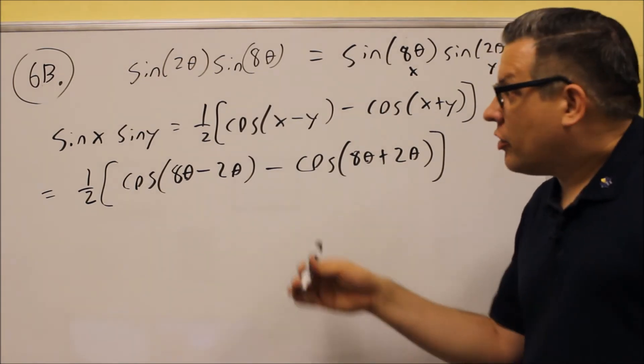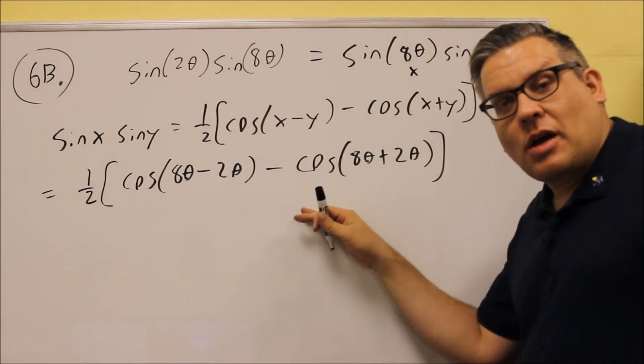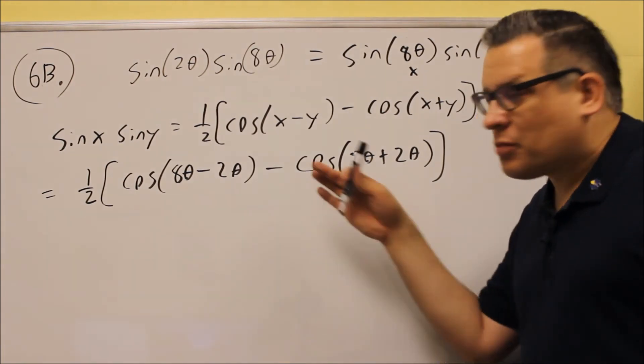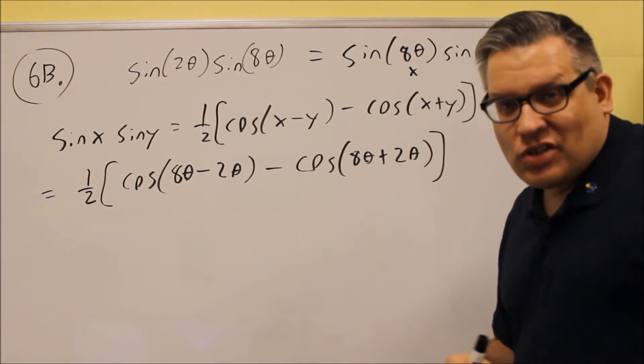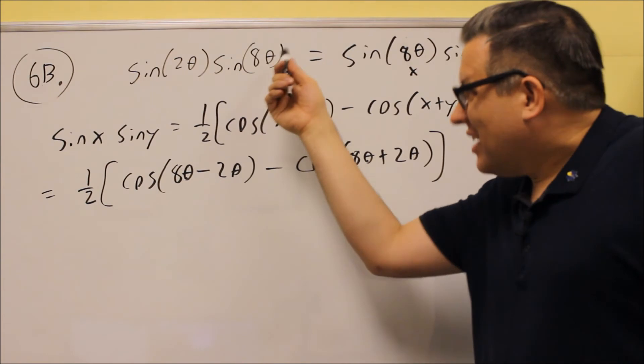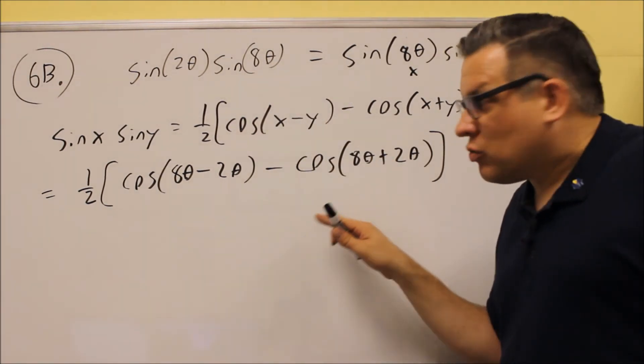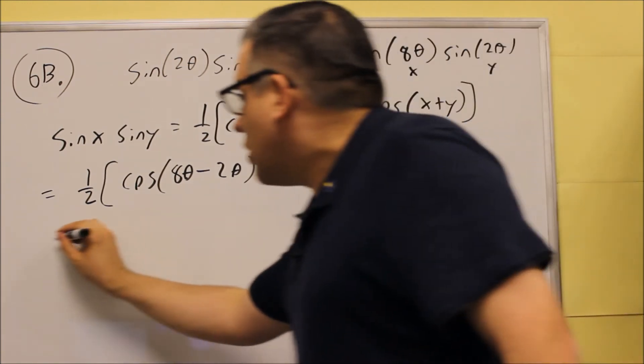Because we have thetas here, we don't have actual numbers. This time, for this particular problem, you're just going to get an expression for the answer. So this problem in the test, you'll either get an exact value if you have actual angles in there that's given, or you might end up with a problem like this where all you can do is just simplify down as far as we can go.